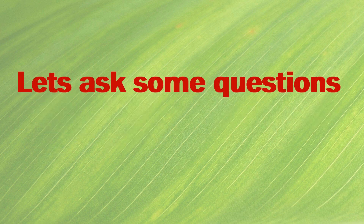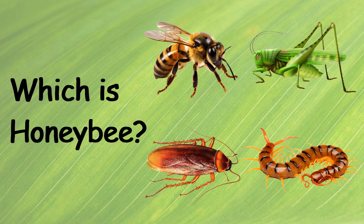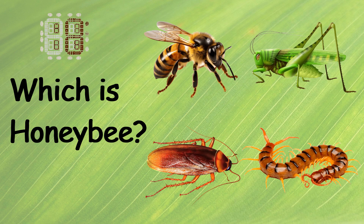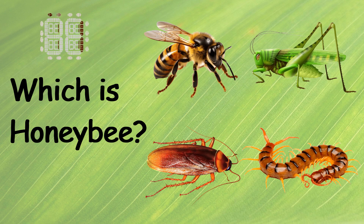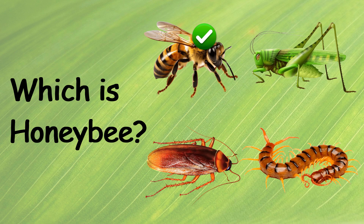Let's ask some questions. Select the right one. Which is Honeybee? Ten, nine, eight, seven, six, five, four, three, two, one, zero. This is the right one.